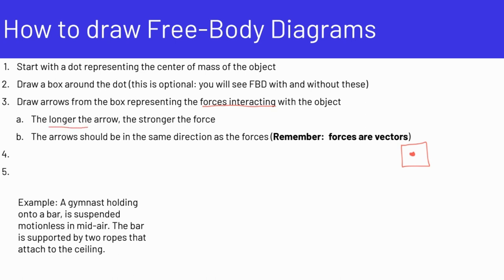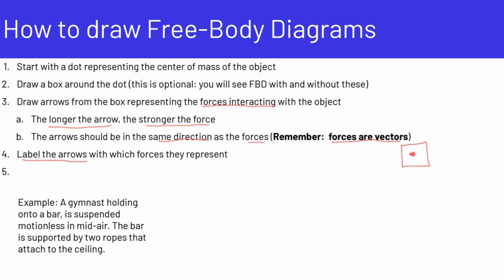The longer the arrow, the stronger the force. The arrows should point in the same direction as the forces, because forces are vectors. Step four is to label the arrows with the forces they represent — it's important to label them. Step five is to determine the net forces. We'll talk more about net forces in detail, but for now we just know that we need to do that.